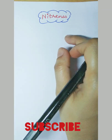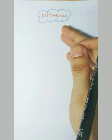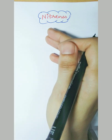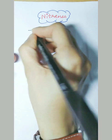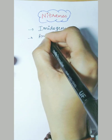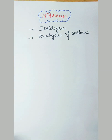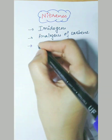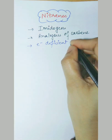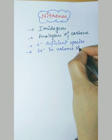Welcome back with another video on nitrines. As we have already discussed the reactive intermediates — free radical, carbocation, carbanion, and carbenes — the one left is nitrines. Nitrines and carbenes share the same properties and show the same behavior, but there is a slight difference. Nitrines are also known as imidogens and are analogous to carbene. Like carbene, nitrine is also an electron-deficient species and has six electrons in its valence shell.